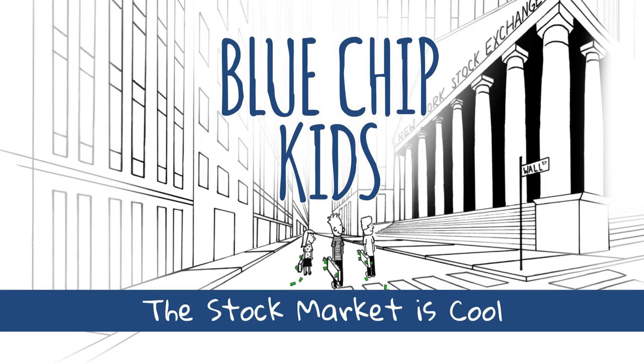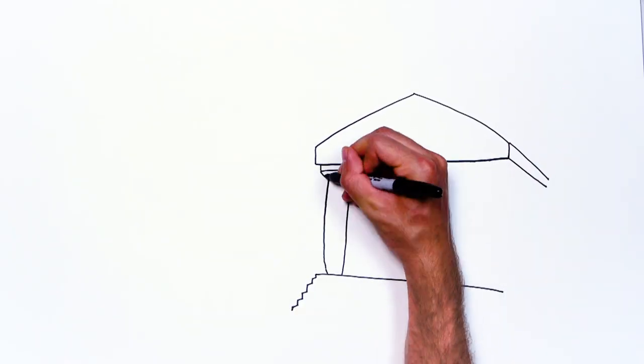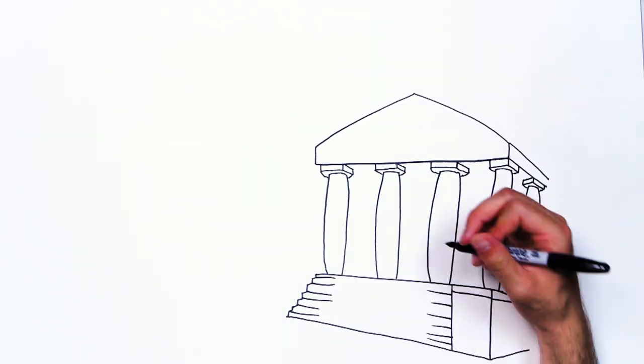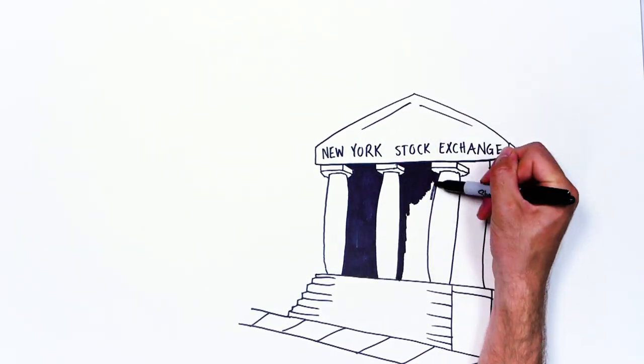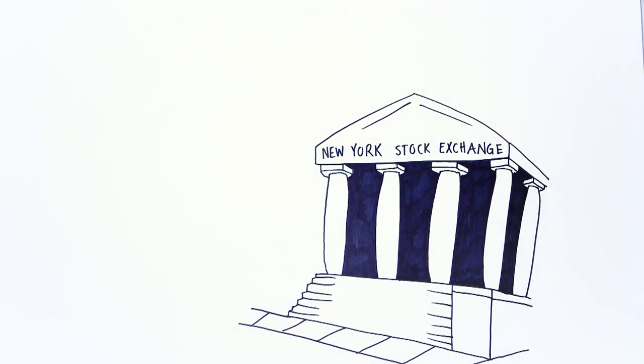Blue Chip Kids. A stock market and a stock exchange are the same thing. A place set up for the orderly buying and selling of stocks. That's it.